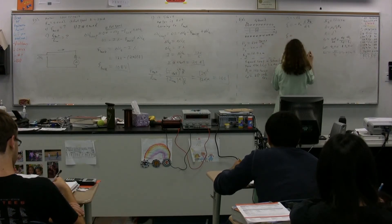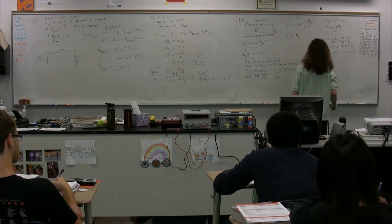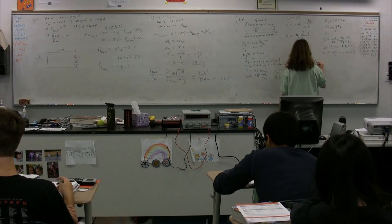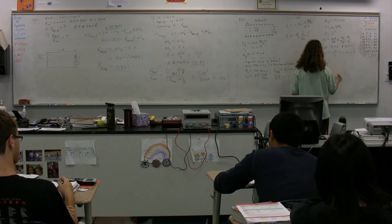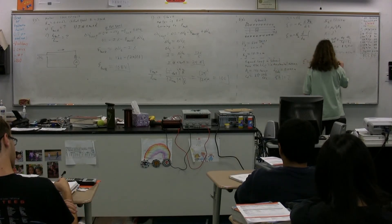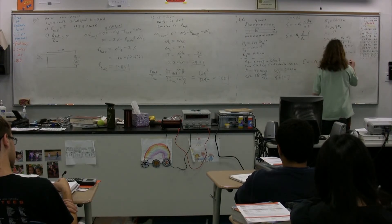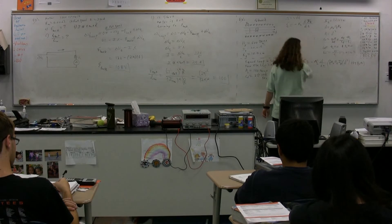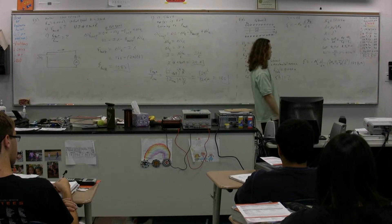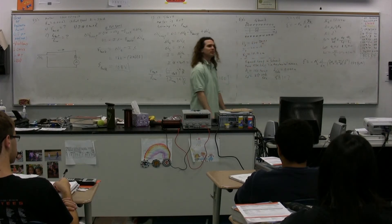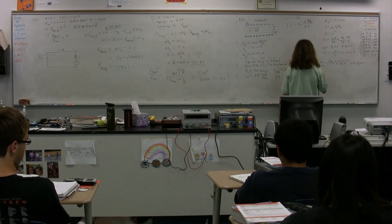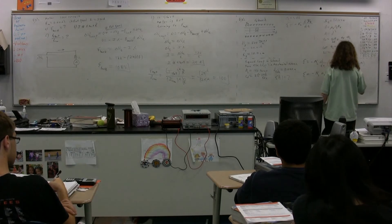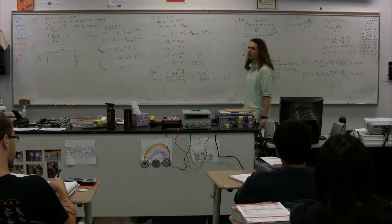Therefore, the EMF equals negative N — the number of loops in the square — times the derivative with respect to time of: B, which is μ₀ times the turn density of the solenoid times the current of the solenoid, multiplied by the area d squared, times cosine of omega times t. We can take μ₀, n, I, and d squared out from underneath the derivative, leaving the derivative of cosine of omega t.